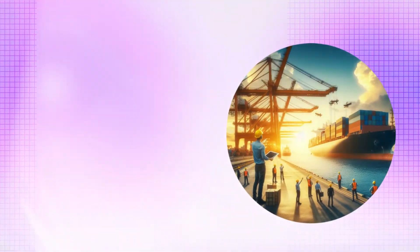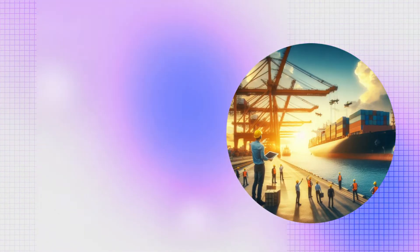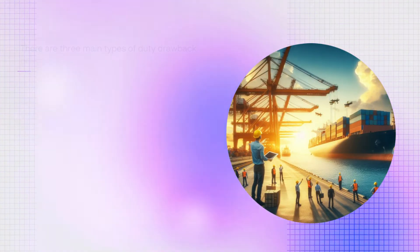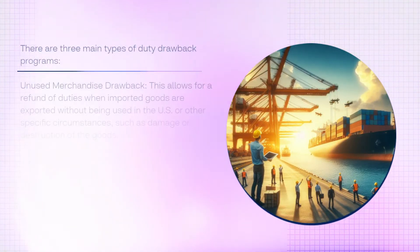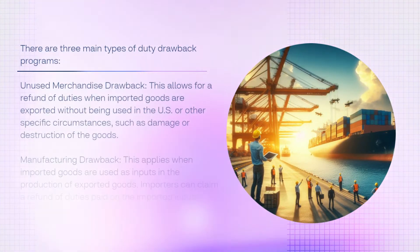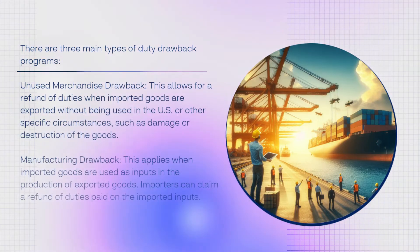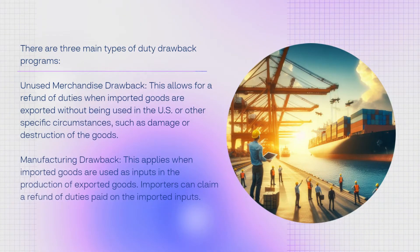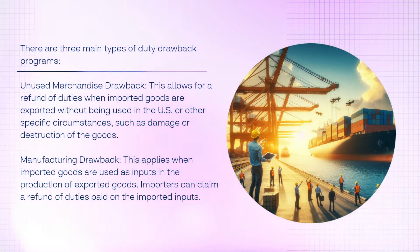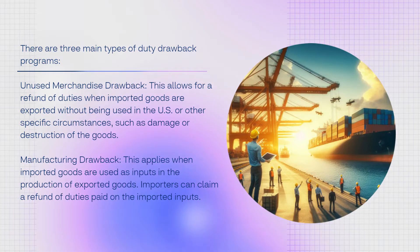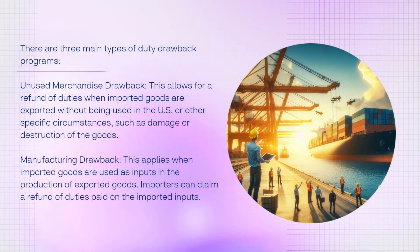There are three main types of duty drawback programs. First, unused merchandise drawback, which allows for a refund of duties when imported goods are exported without being used in the U.S., or under other specific circumstances such as damage or destruction of the goods.